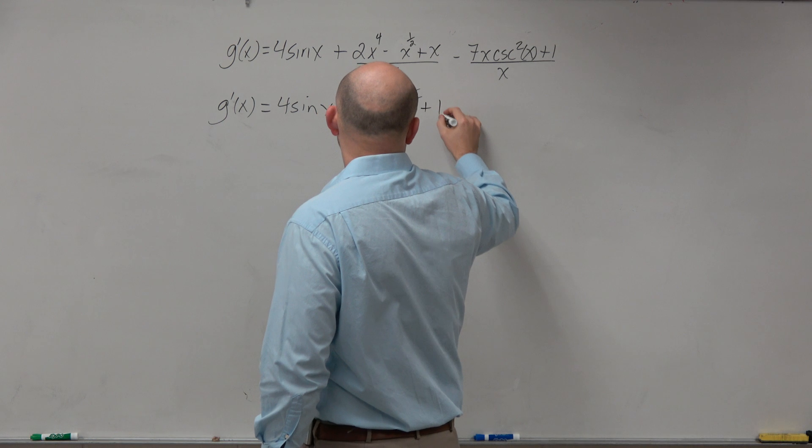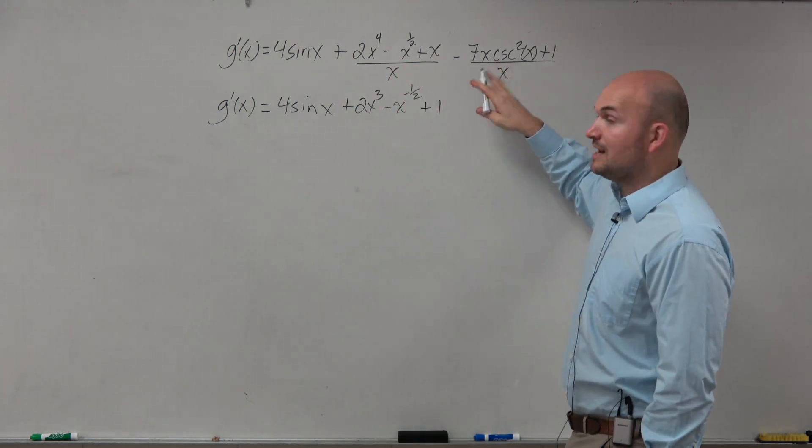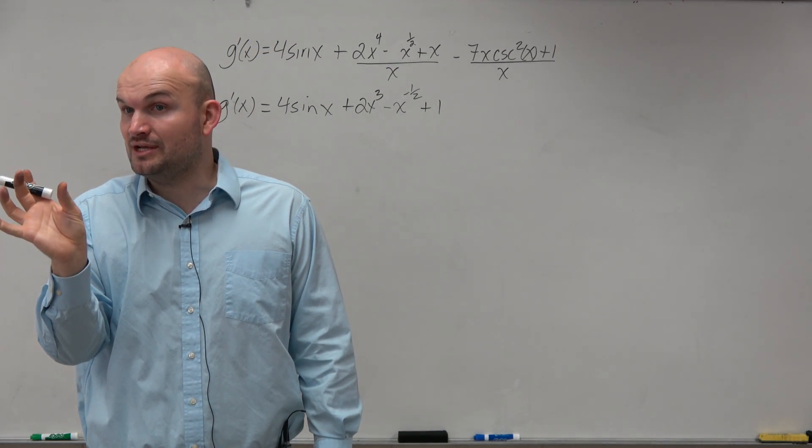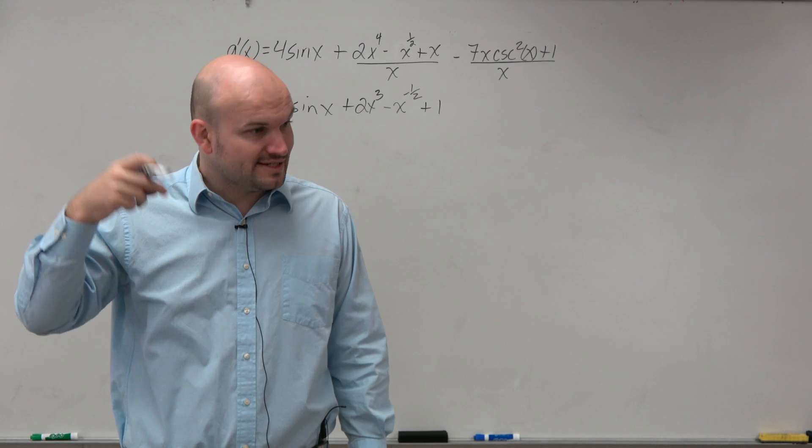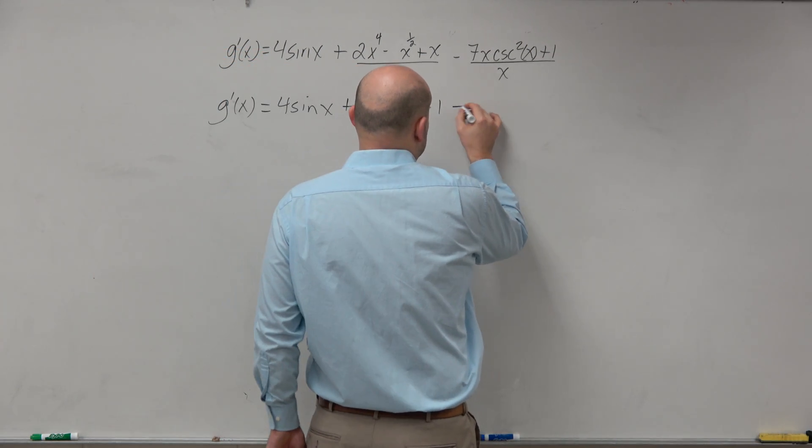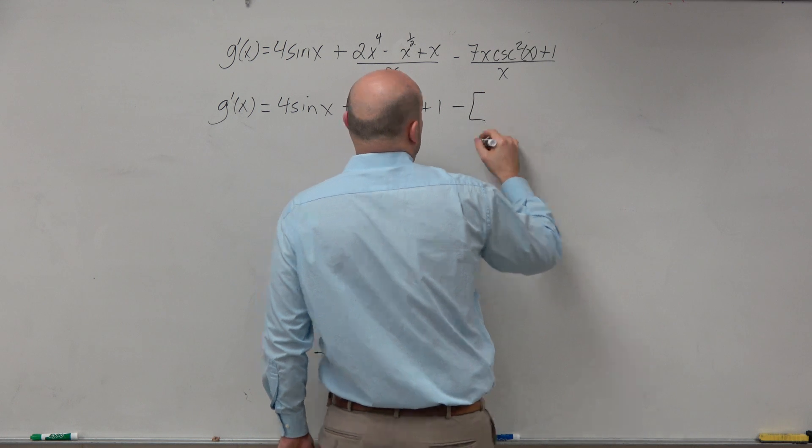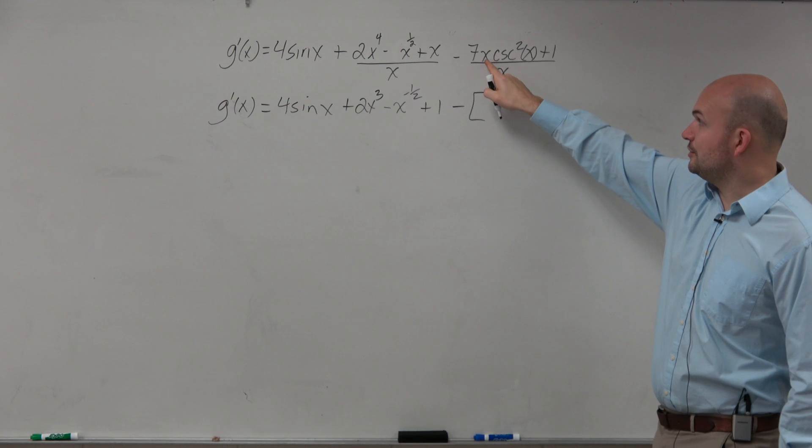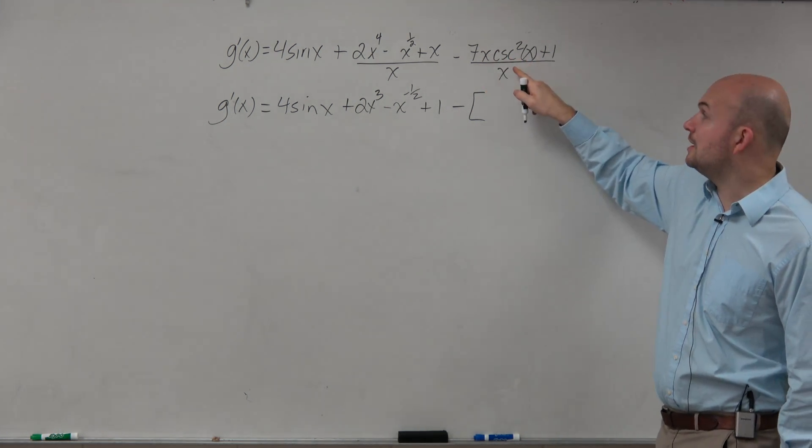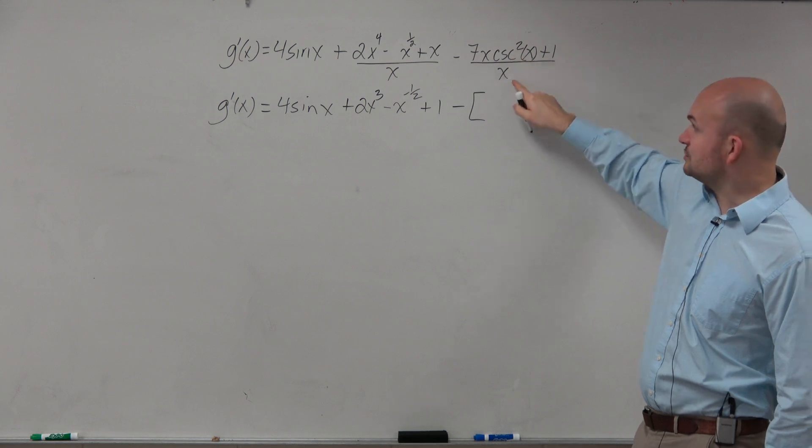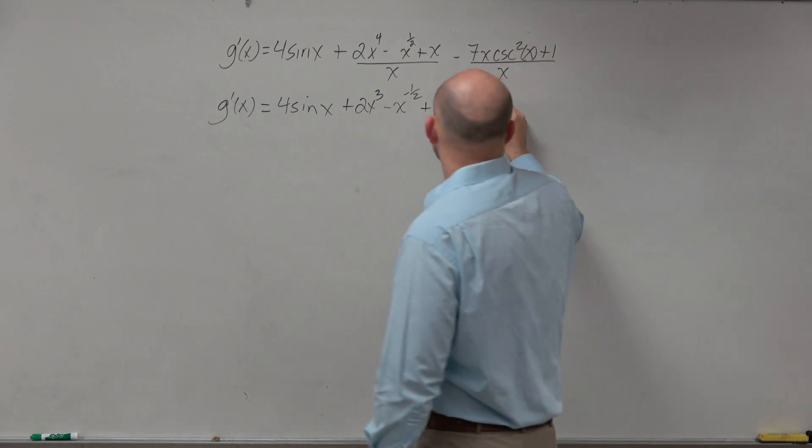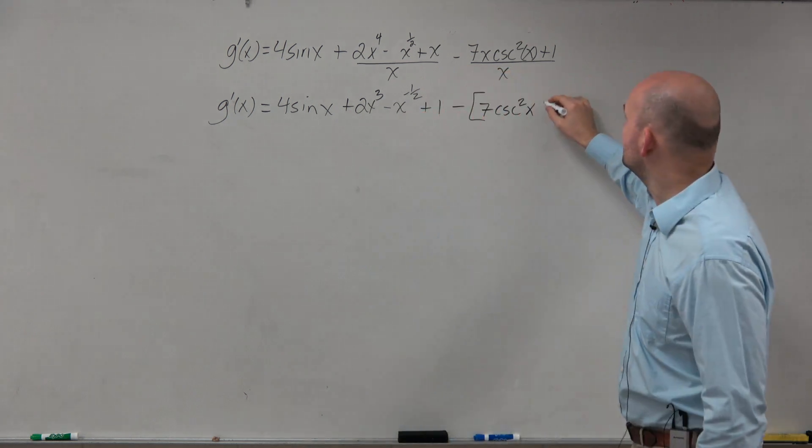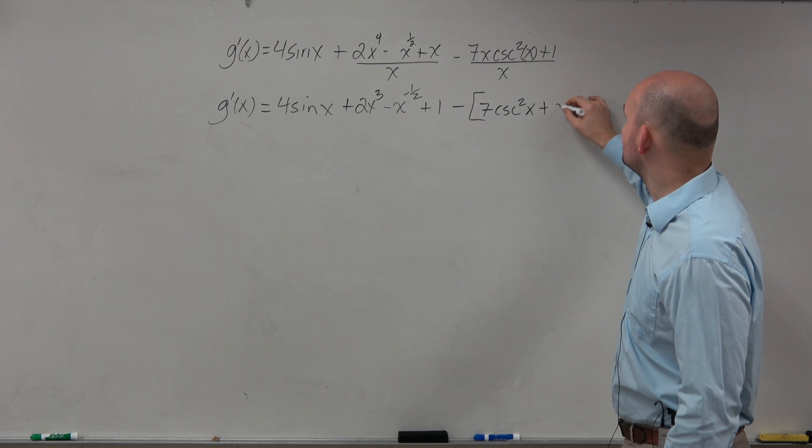And then over here we have plus 1. Now on this one we've got to be careful because we have a negative in front, and we also have terms that are separated by addition or subtraction. So my advice to you would be parentheses. I'm going to use a bracket. This x is divided by this term, and x is divided by that term. Notice how 7x and cosecant squared of x are not separated by addition or subtraction. So really, the x is only going to this one. So it's 7 cosecant squared of x.